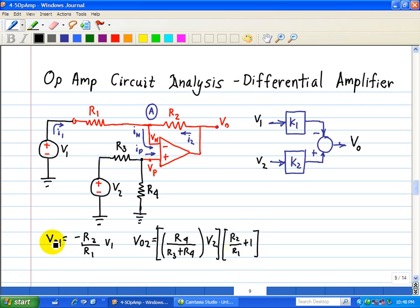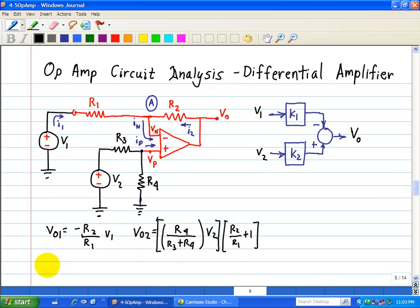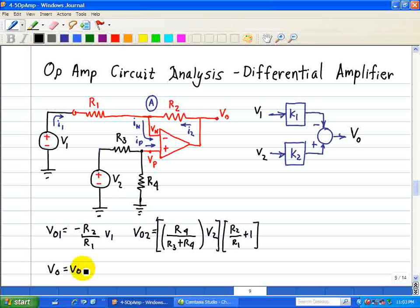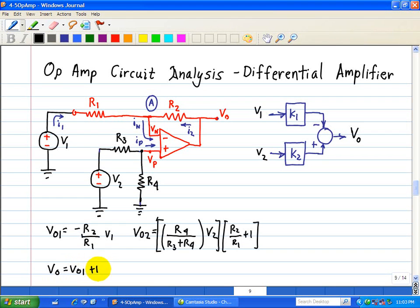The output, VO, is due to each of these outputs. That is, VO is equal to VO1 plus VO2.